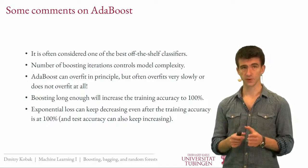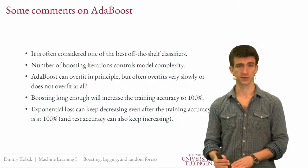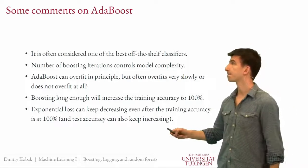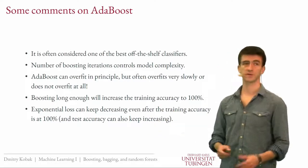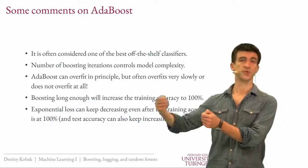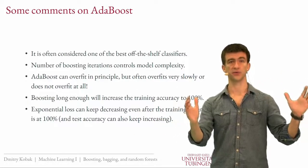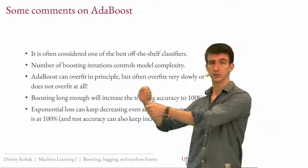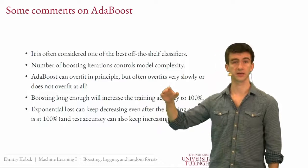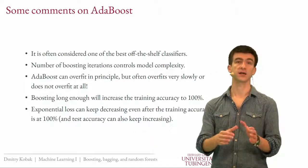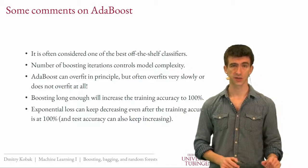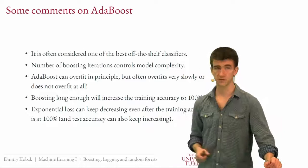If you boost for long enough, training accuracy reaches 100% — you can always fit any training set perfectly. This treatment with the exponential loss function shows that even after training accuracy hits 100%, the algorithm won't stop: you can keep boosting, and the test error can keep decreasing while the exponential loss on the training set also keeps decreasing. This shows AdaBoost truly optimizes the exponential loss function and not just misclassification.